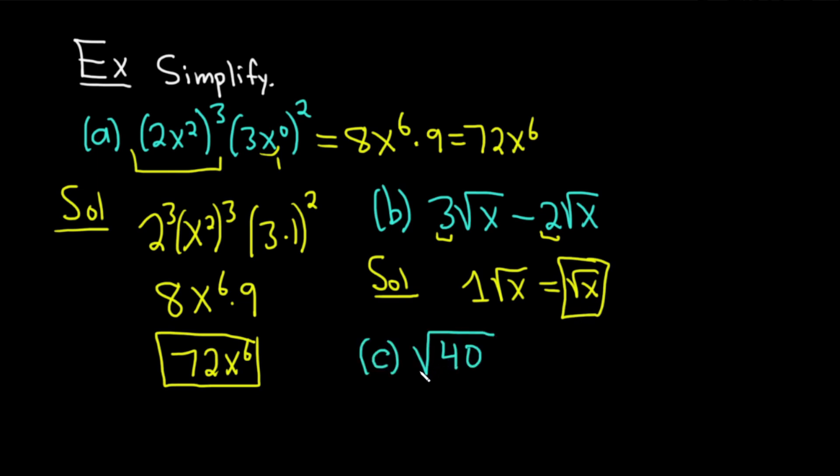Part C. We have the square root of 40. So this one is a little bit different. Solution. So whenever you're trying to find the square root of something like this that you don't know, you want to think about the factors of 40. So what's the largest factor of 40 that's a perfect square? In other words, what's the largest factor for which you can take the square root of that factor and get a whole number? Well, 4.